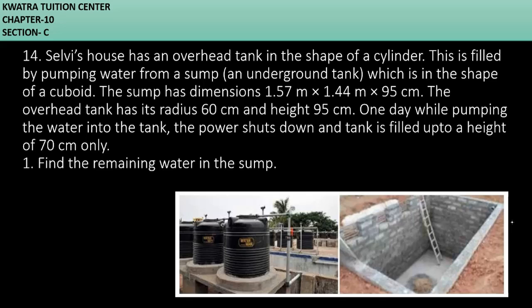Now moving to the fourteenth one. Let's start with question number 14. It says Selvi's house has an overhead tank in the shape of a cylinder. This is filled by pumping water from a sump which is in the shape of a cuboid. The sump has dimensions 1.57 meter, 1.44 meter, 95 centimeter. The overhead tank has its radius 60 centimeter and height 95 centimeter. One day while pumping water into the tank, the power shuts down and the tank is filled up to a height of 70 centimeter. They are saying find the remaining water in the sump.